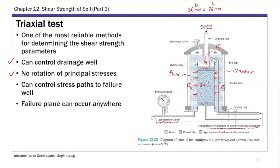Because there is no rotation of principal stresses, by adjusting the magnitude of σ1 and σ3 you can control the stress path of the specimen to failure, mimicking what the soil undergoes in the field. The third advantage is that the failure plane can occur naturally. Unlike the direct shear test where the soil specimen is forced to fail horizontally, in a triaxial test the soil specimen fails naturally along the weakest plane.